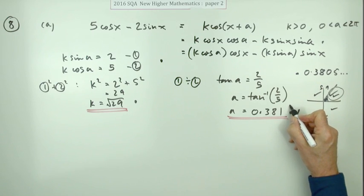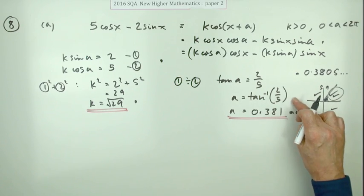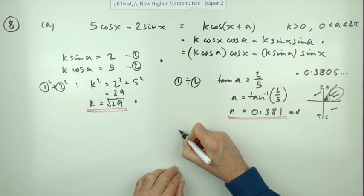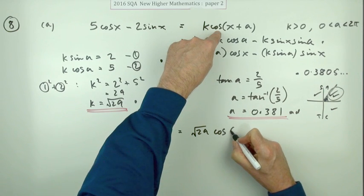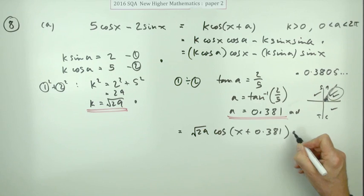If you do that, you get a mark. Well, it's not quite strictly true - you get the mark once you've done that and put it all together. Although it's going back to this form, so it's equal to root 29 cos of x plus 0.381. Now you get the mark.